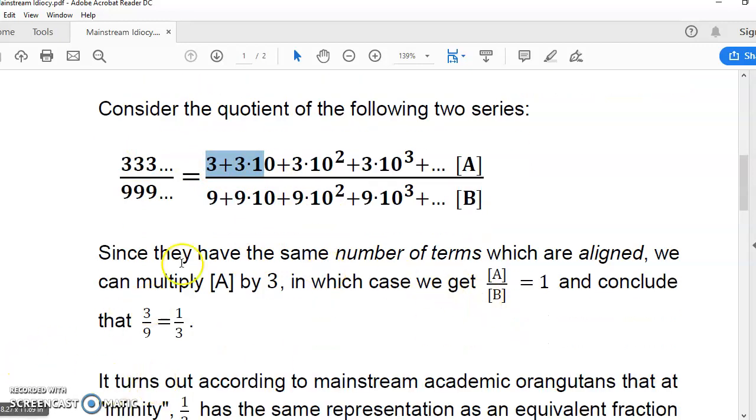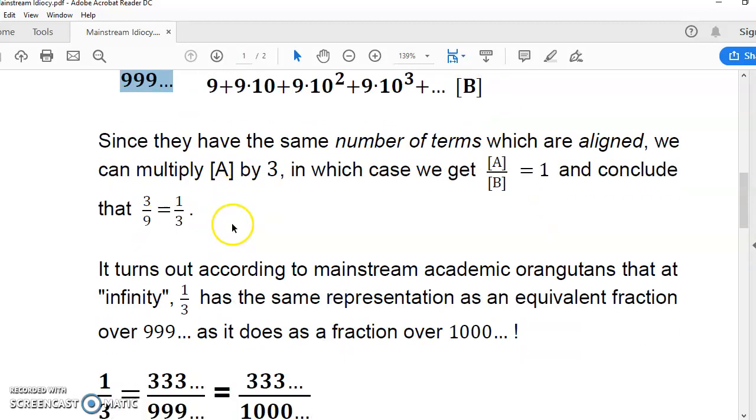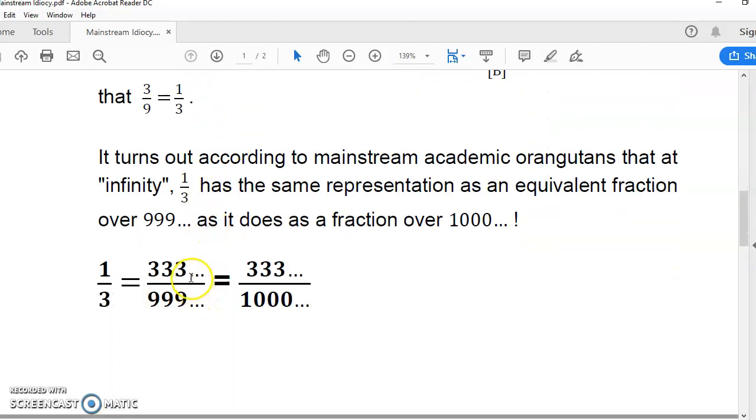So, I can conclude that 333... over 999... is equal to a third, and that this expression here is equal to a third. No problem. We have that this expression now is equal to a third.